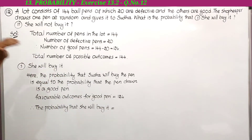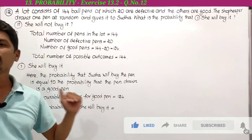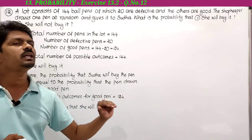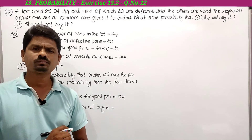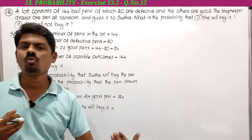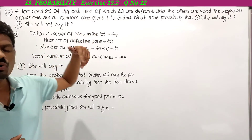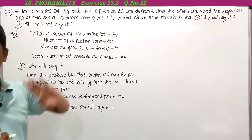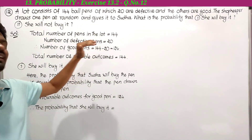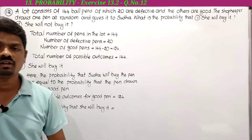Total number of pens in the lot = 144. Number of defective pens = 20. Therefore, number of good pens = 144 − 20 = 124. Since there are 144 pens in the lot, the total number of possible outcomes in this experiment is 144.